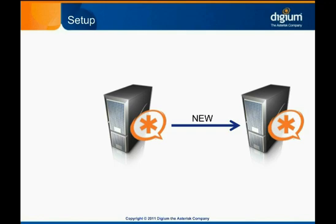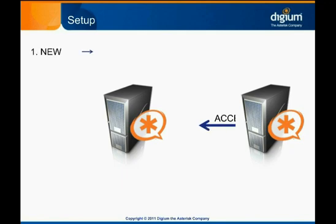The Asterisk server on the right responds with an ACCEPT message. This acknowledges the prior New message and indicates the receiving server's willingness to take the call. The ACCEPT message also declares the codec that the right-hand server wants to use for the call.